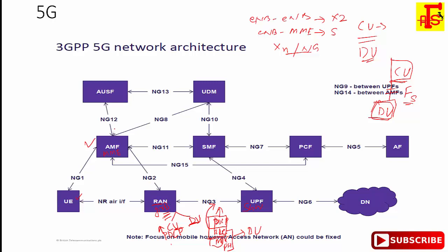The AMF is the Access and Mobility Management Function. In LTE it was called MME, but in 5G it is called AMF. Its functions include NAS signaling and integrity protection, mobility control, NAS termination, session management NAS forwarding, authentication, UE security context management, registration management, and connection management.